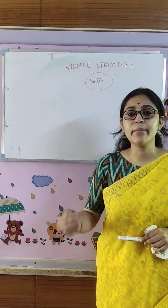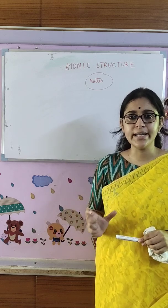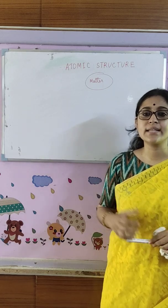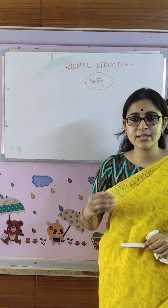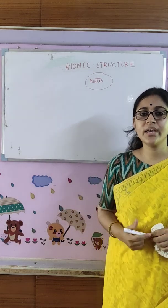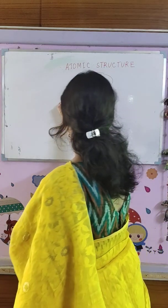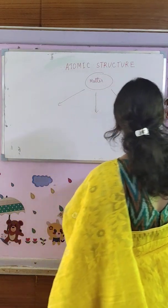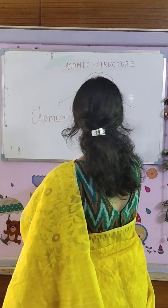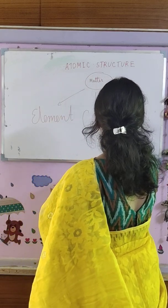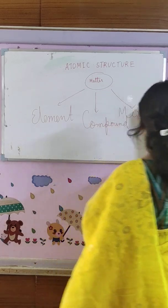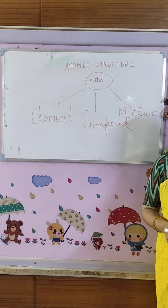Now, if we want to classify matter — matter is the general term, isn't it? Around us, everything we can call matter. But if we want to classify matter — I am not speaking about the states of matter like solid, liquid and gas — I am telling you that if we divide matter, we can get three forms of matter: element, compound, and mixture.